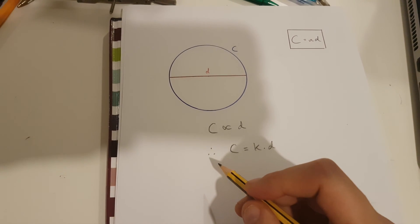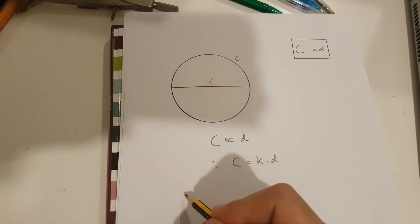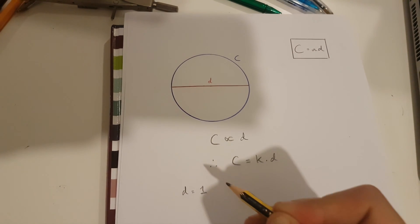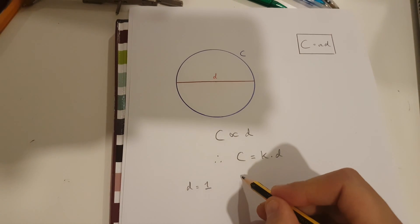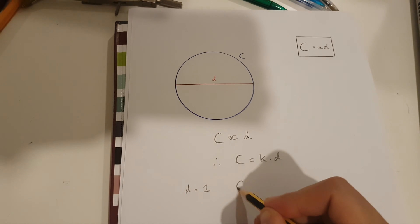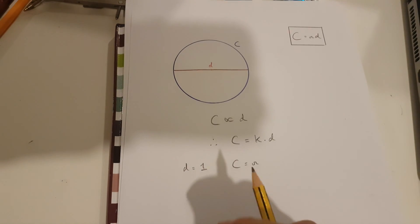Now, it turns out, when the diameter of a circle is 1, its circumference is equal to pi.